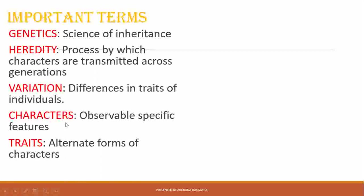Traits are alternate forms of a character. Eye color is a character — it can be brown, black, or sometimes even green, and those are the traits for the character of eye color. Height is another character — an individual can be tall, short, or medium height; those are traits. In a plant, flower color is the character, and traits can be pink, purple, or red.